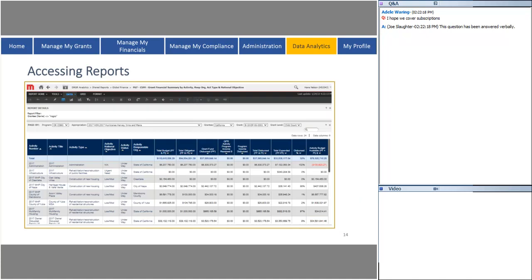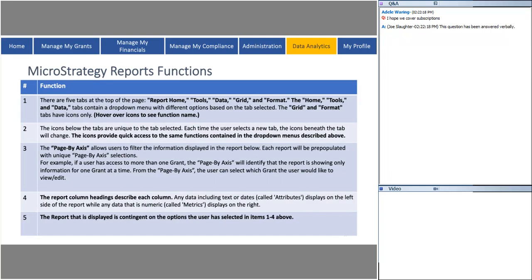Once you find the global report you'd like to access, once you click on the title name, a grid report will be populated — Jennifer will show you this in the live demo. The page by access and report filters can be very useful and helpful for you all. Make sure you understand how to use those features in the system — it's definitely going to make your life a lot easier once you become comfortable with those functions.